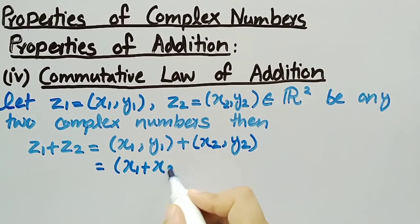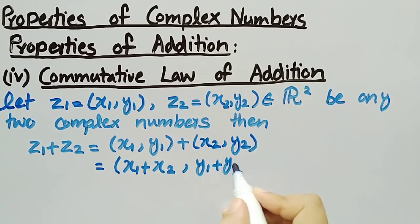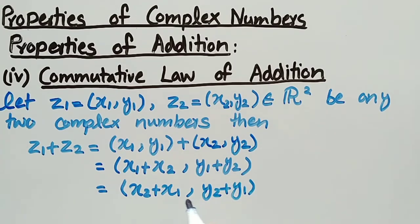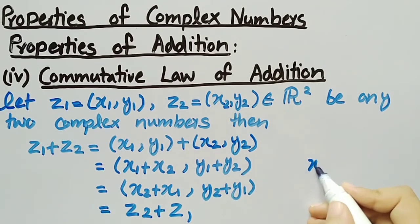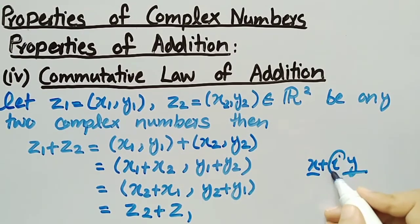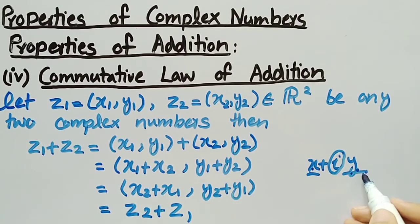By the definition of addition of complex numbers, we can write Z1 plus Z2 as (X1 plus X2, Y1 plus Y2), which can also be written as (X2 plus X1, Y2 plus Y1) by the commutative law of real numbers, which equals Z2 plus Z1. Here, we have used the commutative law for real numbers because in the complex number X plus i·Y, X and Y are real numbers, so we can apply the commutative law for real numbers.